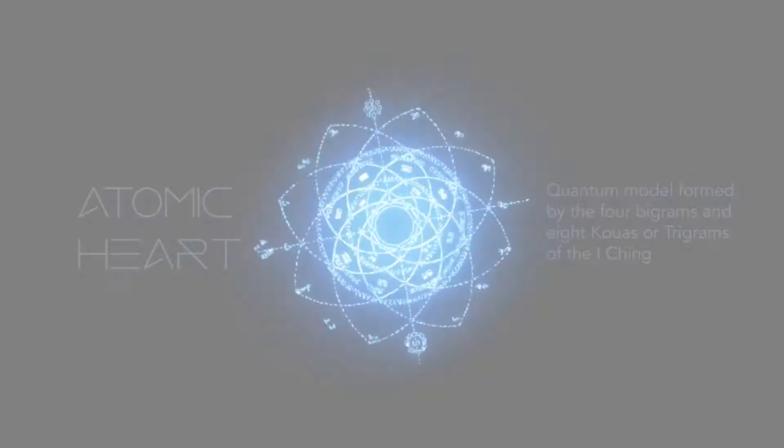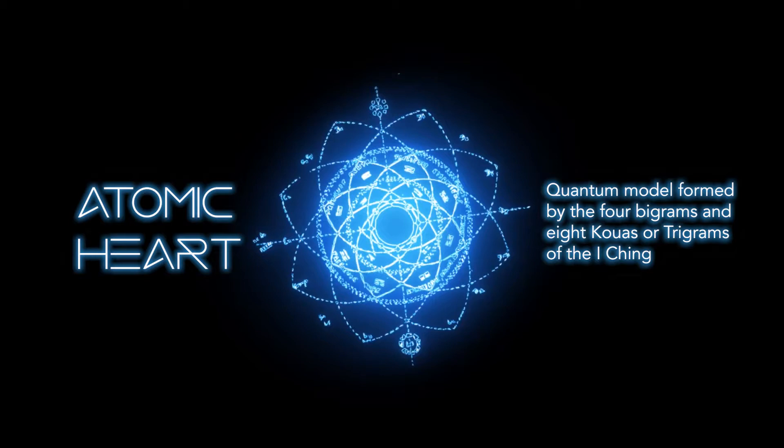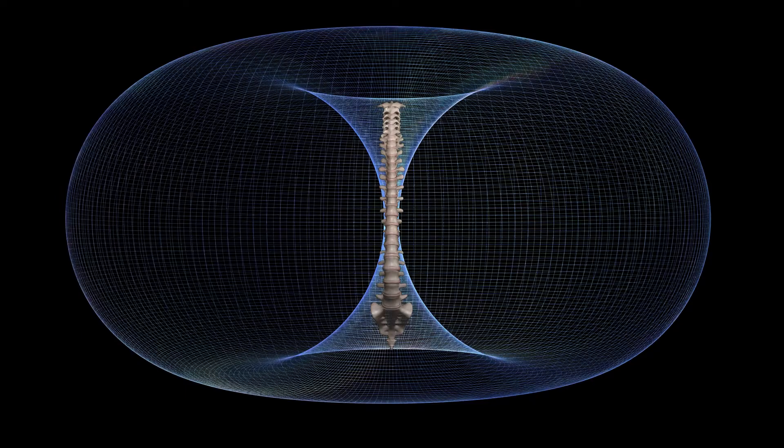The atomic heart represents a quantum model formed by the four big grams and eight quads, or three grams of the high chain, energetic and archetypal patterns that act directly on the spine.